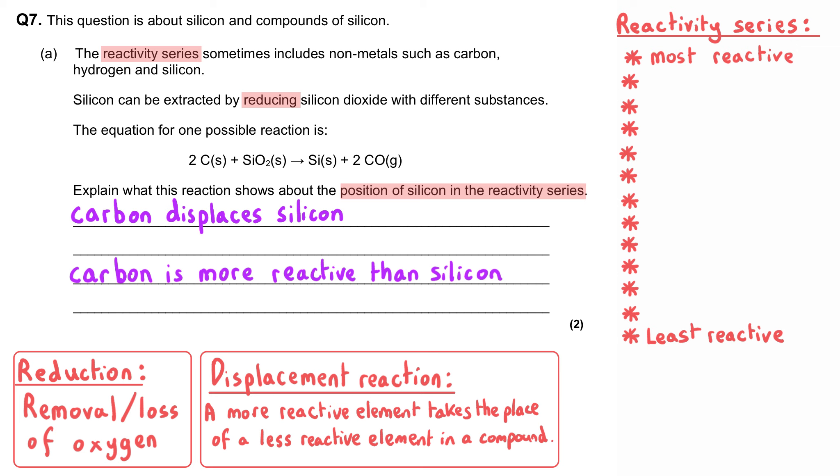Or we could say silicon is less reactive than carbon, or alternatively, we could say that carbon is above silicon in the reactivity series.